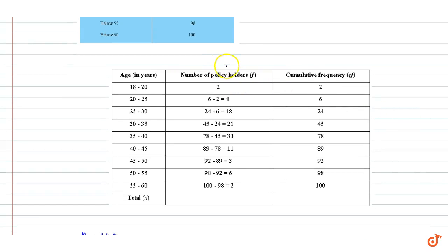The individual frequencies can be calculated by subtracting the previous cumulative frequency from the current cumulative frequency. For class 2, the individual frequency is 6 minus 2, which equals 4. For the third class, it's 24 minus 6, which equals 18, and so on.